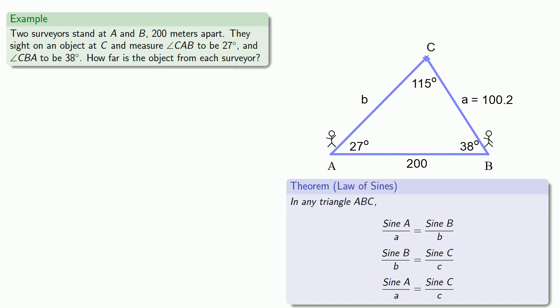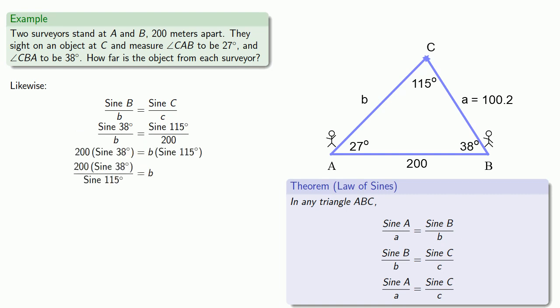So substituting in our values, then solving for b, then using a calculator to find the sine of 38 degrees and the sine of 115 degrees gives us our value for b.